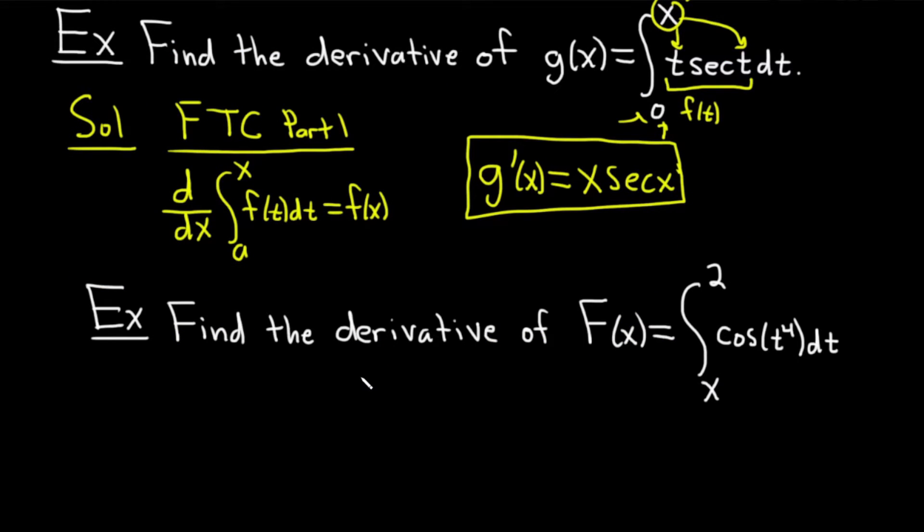This example is a little bit harder. Find the derivative of F(x) equals the definite integral from x to 2 of cosine of t to the fourth with respect to t. Solution. You'll notice that the x is on the bottom here. So what we're going to do is put it on the top.